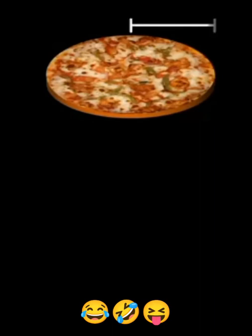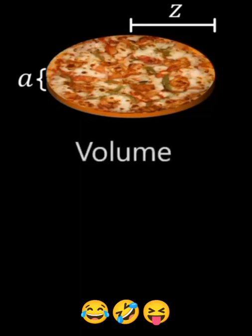You know why it's called pizza? The reason might be math. Let's say you have a round pizza with the radius equal to z and a depth equal to a. The volume of the pizza is pi multiplied by z squared multiplied by a.